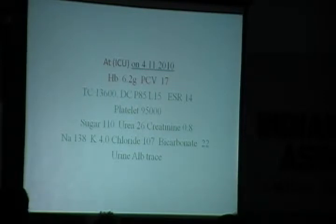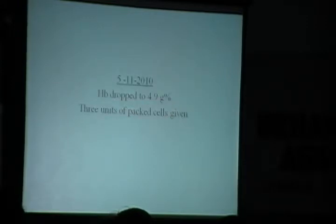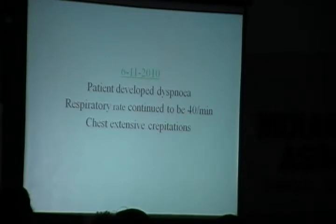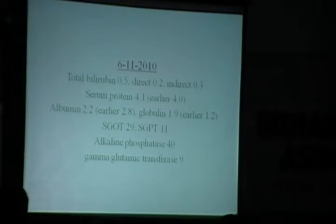Other investigations were largely normal: platelet count was 95,000, bilirubin was normal. However, plasma protein was 4 grams and albumin was 2.8. The next day, hemoglobin dropped to 4.9 grams and three units of packed cells were given. By the third day she had a fourth operative procedure. On the sixth day she developed fever, respiratory rate continued at 40 per minute, and there were extensive crepitations on auscultation.